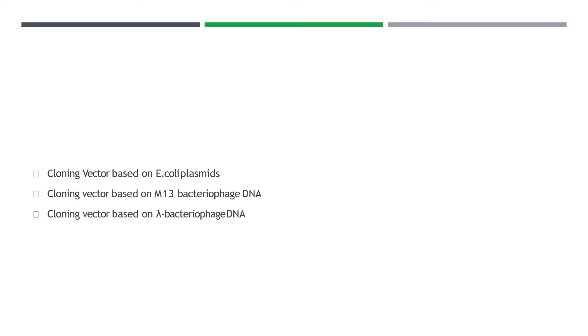Welcome back. In this video we'll be going through vectors for E. coli — studying the entire phenomena, all the plasmids, all the designs, and what is required for being a vector for E. coli. There are basically three types of cloning vector: first, cloning vectors based on E. coli plasmids; second, cloning vectors based on M13 bacteriophage DNA; and third, cloning vectors based on lambda bacteriophage DNA.